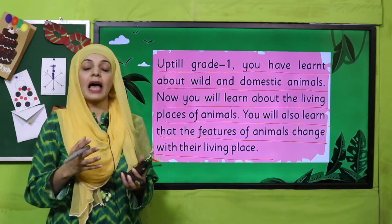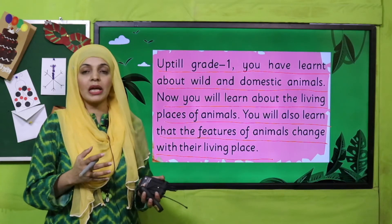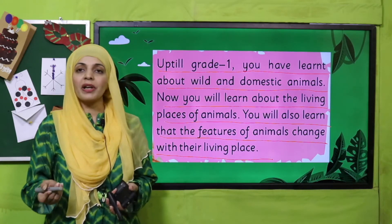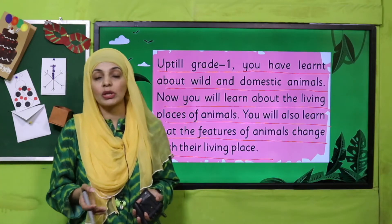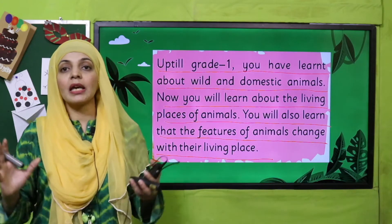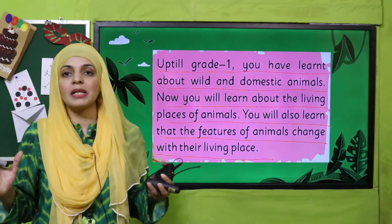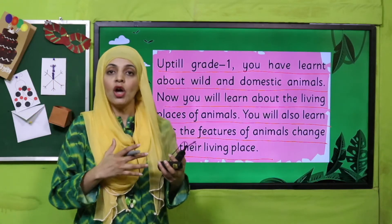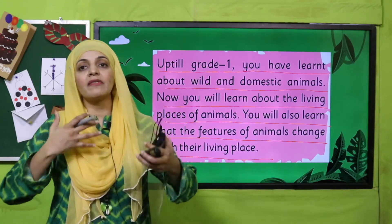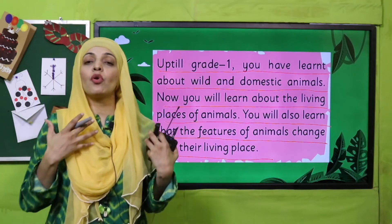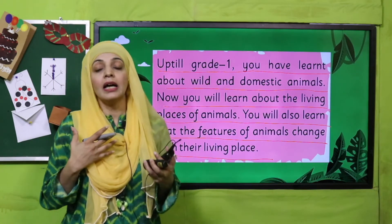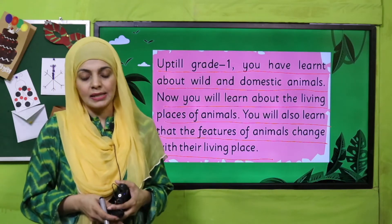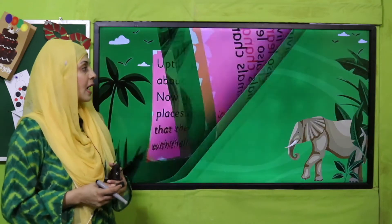Grade One mein aapne living things aur non-living things ke baare mein parhaa. Iske alawa aapne yeh bhi parhaa ke animals ya wild hote hain, ya domestic hote hain — ya gharon mein rakhne wale animals, farm animals, ya junglon mein rehne wale animals hote hain. Is unit mein hum padheinge ke mukhtalif animals ke rehne ki mukhtalif jagah hoti hai, aur usi ke hisaab se they develop some special features — wo kaunse features hote hain aur kahan kahan yeh janvar reh sakte hain, kya living places ho sakte hain — we will discuss that.